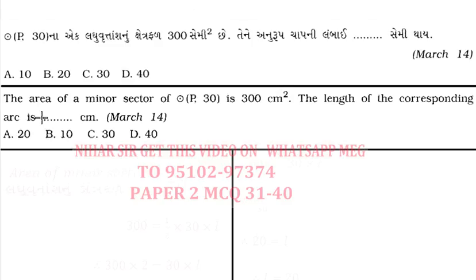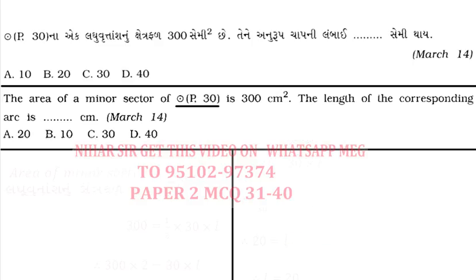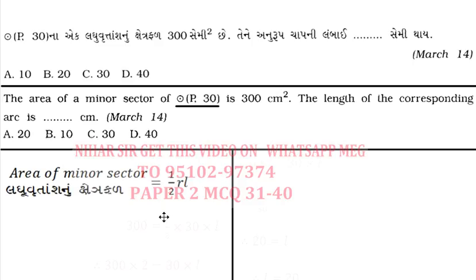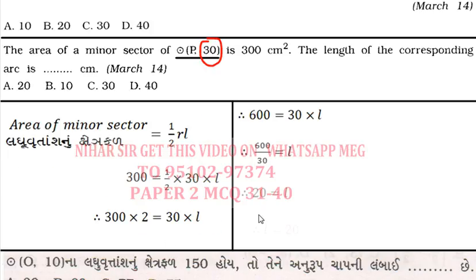Next: a circle has center P and radius 30. The area of the minor sector is 300. I need to find the length of the corresponding arc. Using the formula: Area = (1/2) × r × L, so 300 = (1/2) × 30 × L. Solving gives L = 20. The answer is 20.